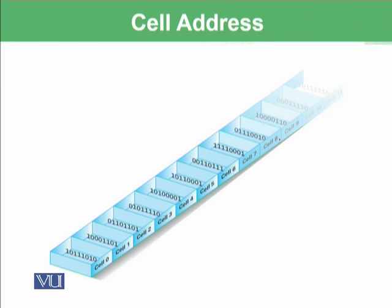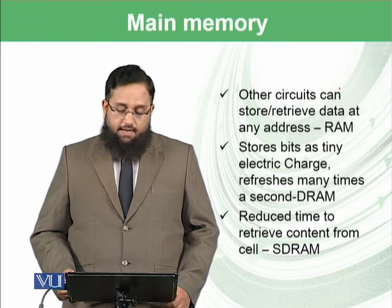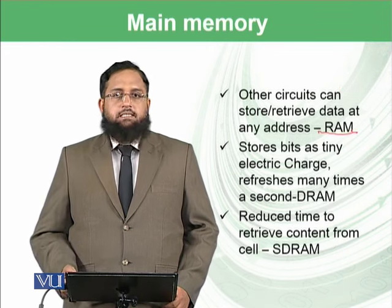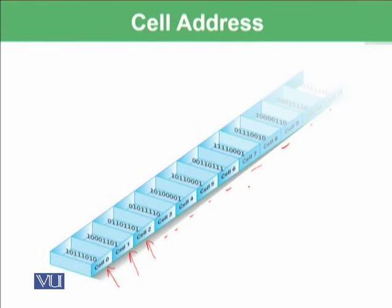Each cell has a cell address starting from cell 0, cell 1, cell 2 and so on. We have trillions of cells and each cell has a cell address starting from cell 0. Other circuits in the computer can store and retrieve data in each cell. That's why we call it random access memory. Access means you have access to all cells here. If you want to store data into this cell, you can straight away save in this location. Such saving or retrieving data is known as random access.